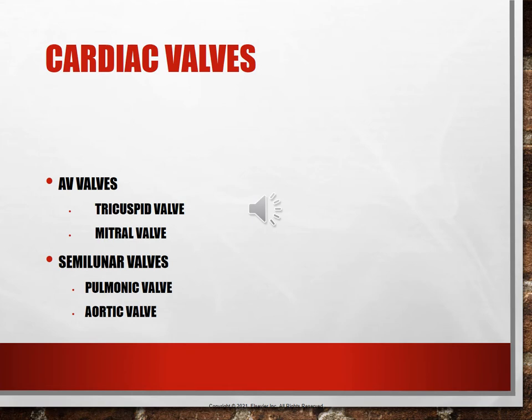The semilunar valves are shaped like a half moon. They keep blood from flowing back into the ventricle when it is at rest. Diastole is when the ventricles are refilling, and systole is when the pump happens and the ventricles squeeze. After systole, during diastole, the ventricles relax, and the semilunar valves prevent blood that was already pumped out from flowing back in.